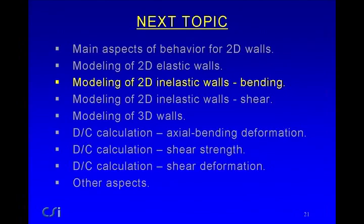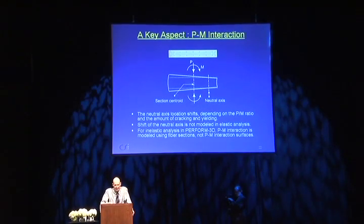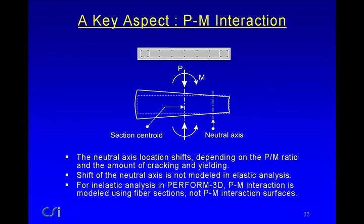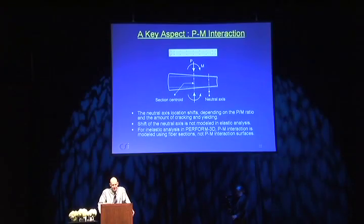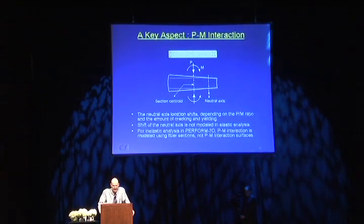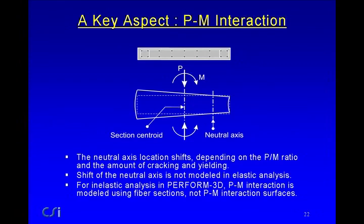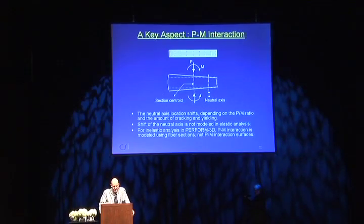Now let's look at modeling 2D inelastic walls — specifically the axial force and bending case. A key aspect is PM interaction. The axial forces can be substantial, and even if they're not, when you bend a reinforced concrete cross-section you get a shift in the neutral axis. Elastic analysis does not tell you this. The neutral axis location shifts depending on the P/M ratio, the amount of cracking and yielding. In PERFORM 3D, we don't use an interaction surface — we use fiber cross-sections. Interaction surfaces and plasticity theory do not apply properly to reinforced concrete, so it would be a big mistake to use them for walls.